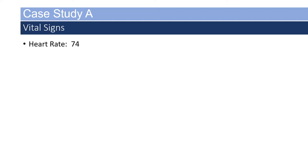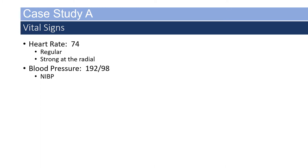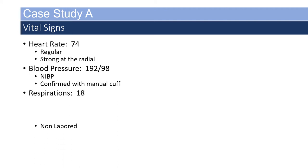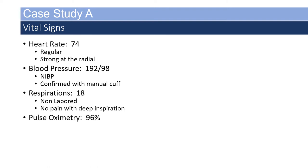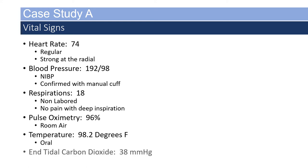The partner takes the patient's vital signs. He has a heart rate of 74, regular and strong at radial. Blood pressure is 192 over 98, taken by the NIBP and confirmed with a manual cuff. He has respirations at 18 and non-labored, no pain with deep inspiration. Pulse oximetry is 96% on room air, temperature 98.2 degrees Fahrenheit orally, and end-tidal carbon dioxide is 38 millimeters of mercury.